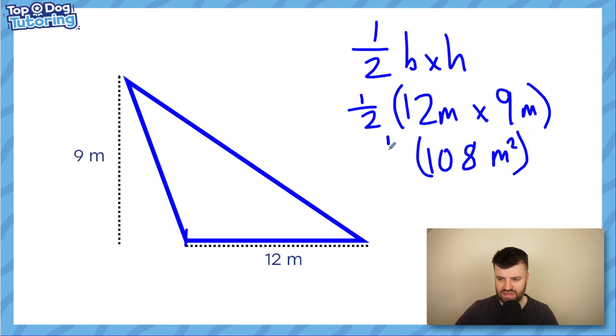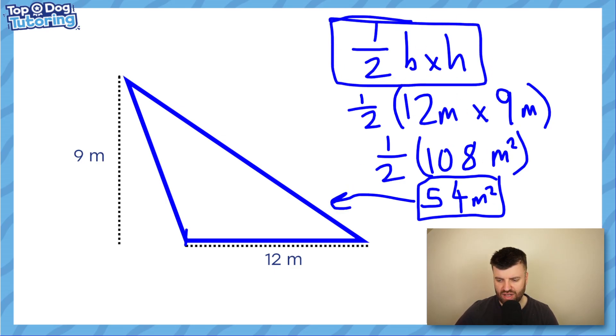But now I need to half that. So half of 100 is 50. Half of 8 is 4. 54 meters squared. And we found the area of this triangle. Again, the important formula, half base times height.